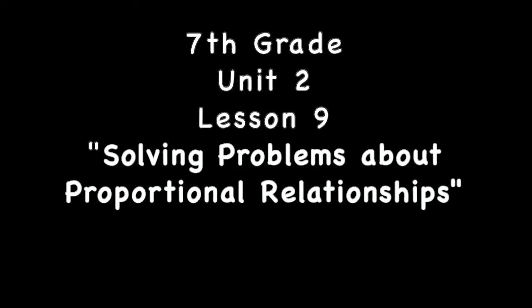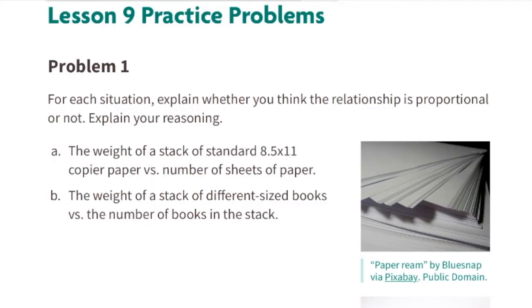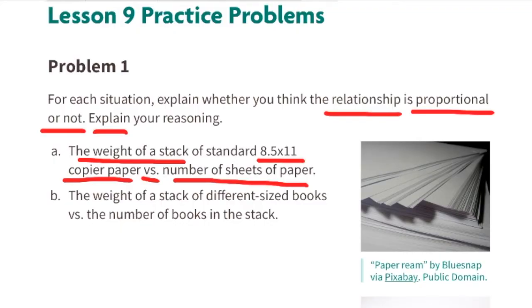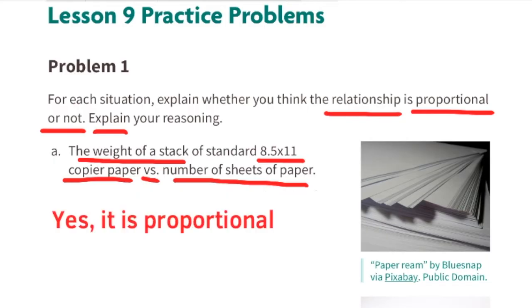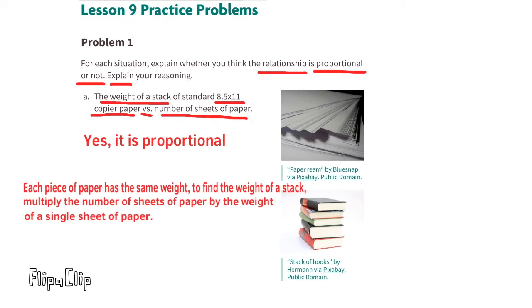7th grade unit 2 lesson 9: solving problems about proportional relationships. Problem 1: for each situation, explain whether you think the relationship is proportional or not. Part a — the weight of a stack of standard 8.5 by 11 copier paper versus number of sheets. Yes, this situation is proportional. Each piece of paper has the same weight; to find the weight of the stack, multiply the number of sheets by the weight of a single sheet.